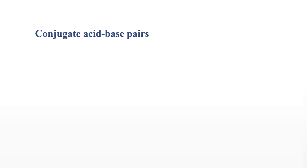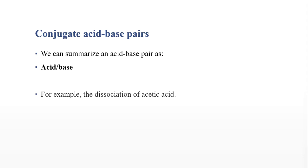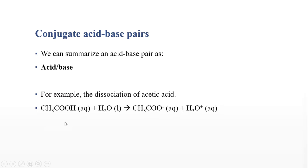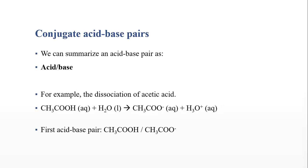Something we need to be able to do in chemistry is to identify these pairs. We can summarize them by writing the acid, then a slash, then the base — always starting with the acid. For example, looking at the dissociation of acetic acid: the first acid-base pair is CH3COOH, because acetic acid is an acid, and the acetate ion is its conjugate base. The only difference between them is a proton — and that is how you usually identify an acid-base pair.